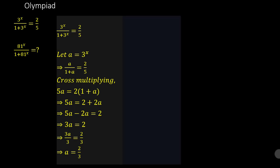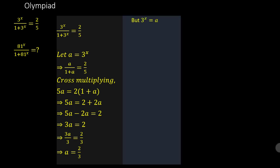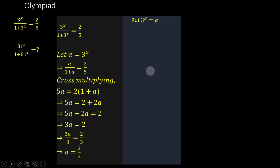That's the first part of it. Don't forget that 3 to the power x is equal to a as seen here. Now let's look at how we can manipulate the expression to create a connection between the two. This will now imply that 3 to the power x is equal to 2 over 3, since 3 to the power x is equal to a and we had a to be 2 over 3.